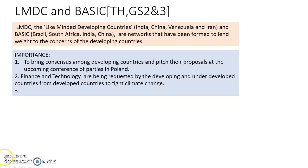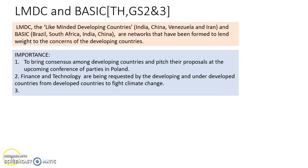LMDC and BASIC. LMDC means Like-Minded Developing Countries, which consist of India, China, Venezuela, and Iran. BASIC means Brazil, South Africa, India, and China. These are networks of developing countries formed to bring consensus on their needs and to project their needs to the developed world.